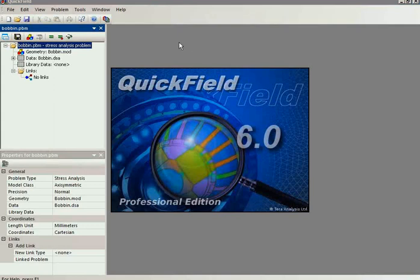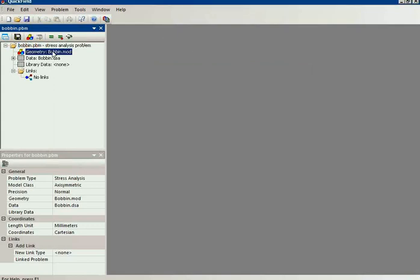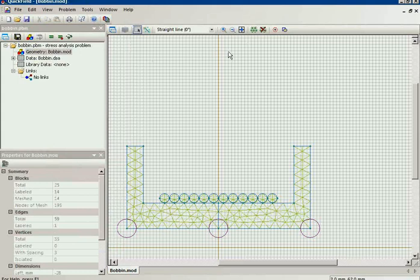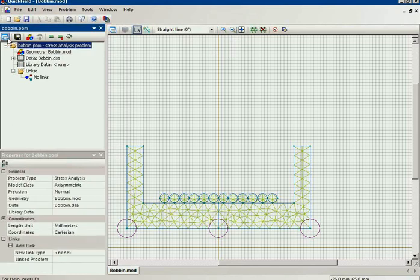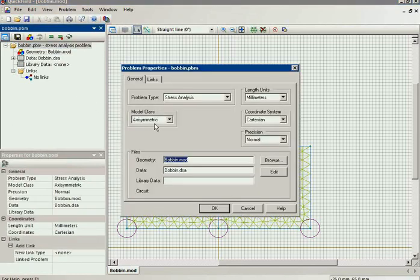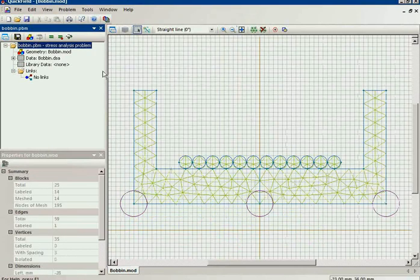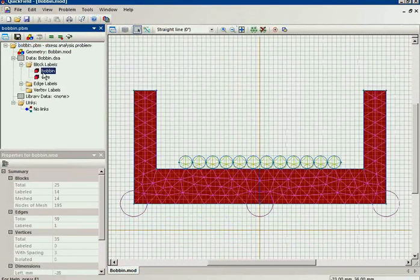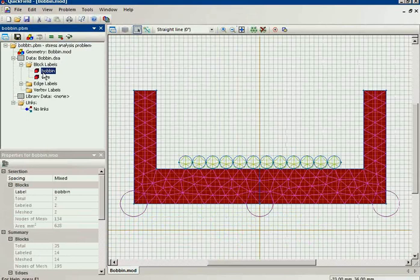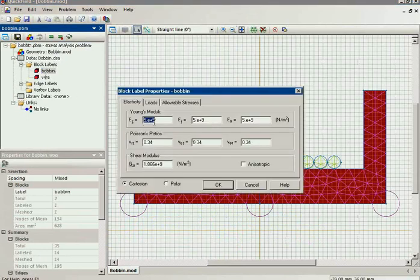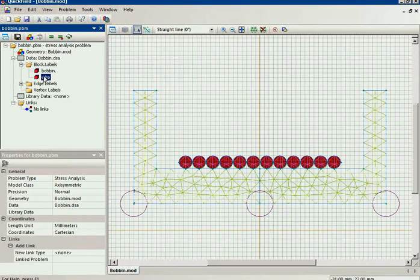Let me show you this model. This is the stress analysis problem. And the model class is axisymmetric. In my geometry model I have two objects, the bobbin and the wire.